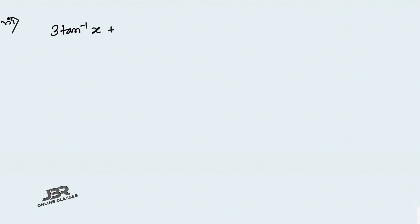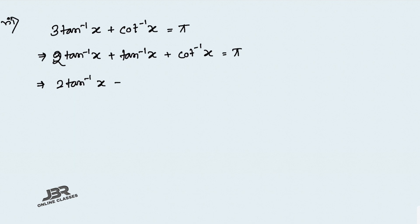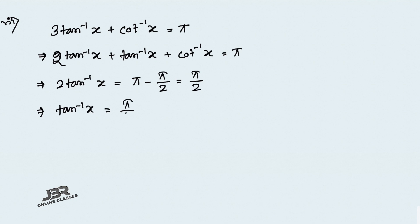Problem 7: 3 tan inverse x plus cot inverse x equals π. Since tan inverse x plus cot inverse x equals π/2, we substitute to get 2 tan inverse x equals π minus π/2 equals π/2, so tan inverse x equals π/4. Therefore x equals tan(π/4) equals 1.